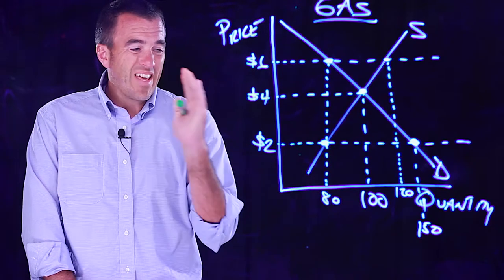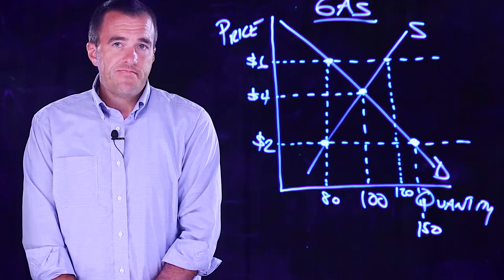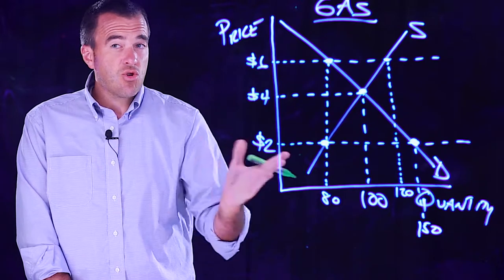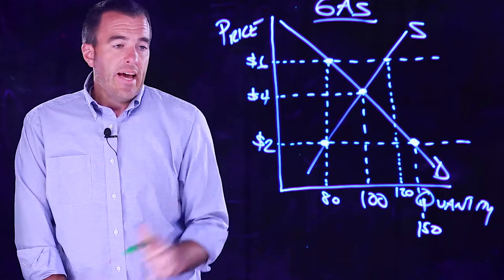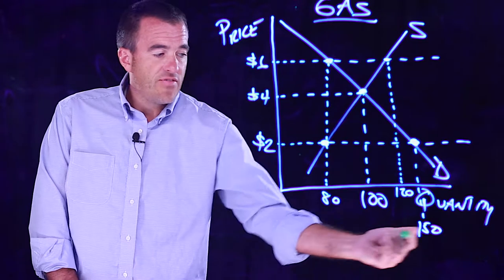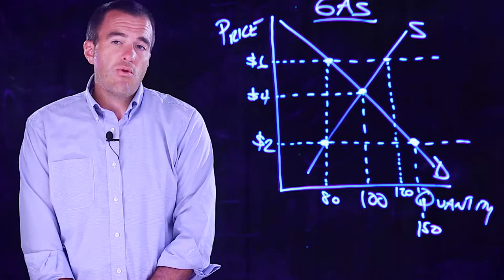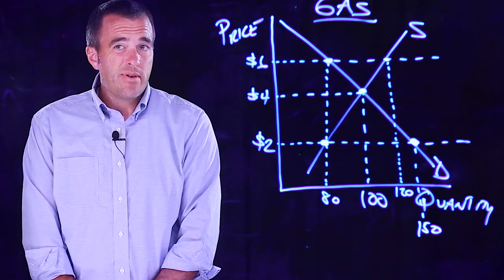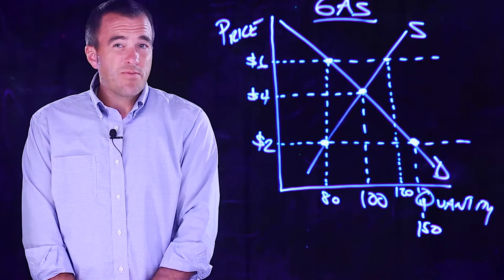However, only 80 units are on the shelf. Given that example, you notice there's a shortage that exists. And if a shortage exists of 70 units and I'm a store owner, I must have maybe sold that too cheap. And so what I'm going to do is raise price.